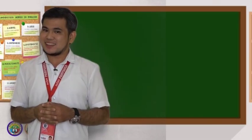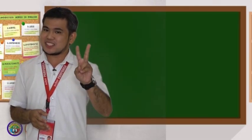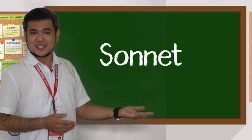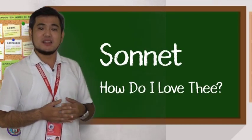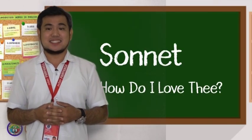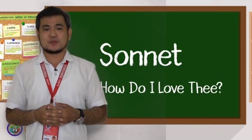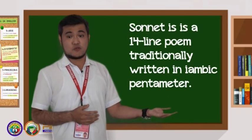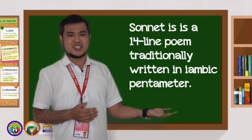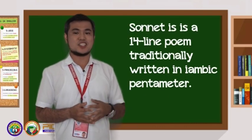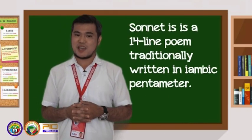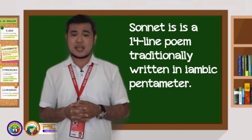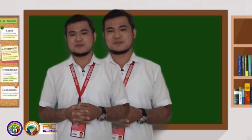It's time to go romantic with the second type called sonnet. The poem "How Do I Love Thee?" is its example. Remember that a sonnet is a 14-line poem traditionally written in iambic pentameter. It is sensationalized by William Shakespeare.